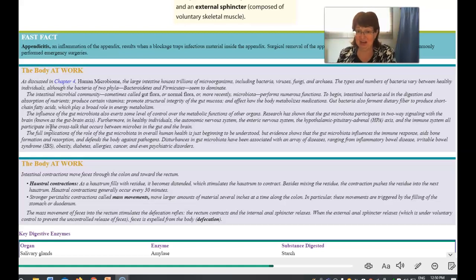If we were to summarize the functions of the gut biomes, the second paragraph says aids in digestion, absorption of nutrients, produces certain vitamins, including vitamin K, which you need for blood clotting. Promotes structural integrity of the gut mucosa and affects how the body metabolizes medications, and it helps ferment dietary fiber.